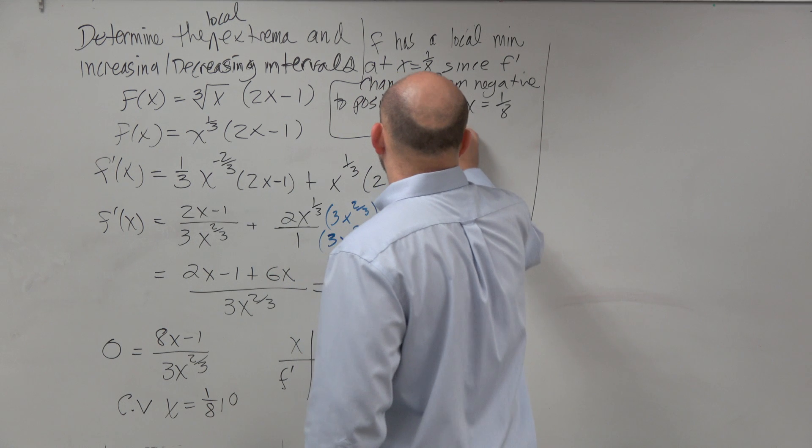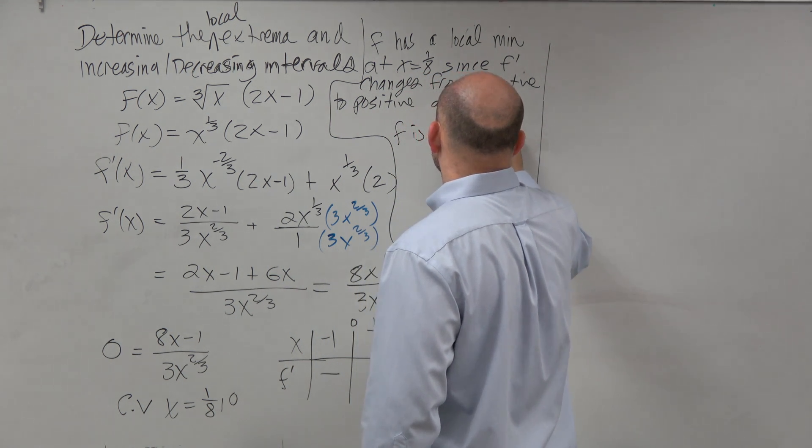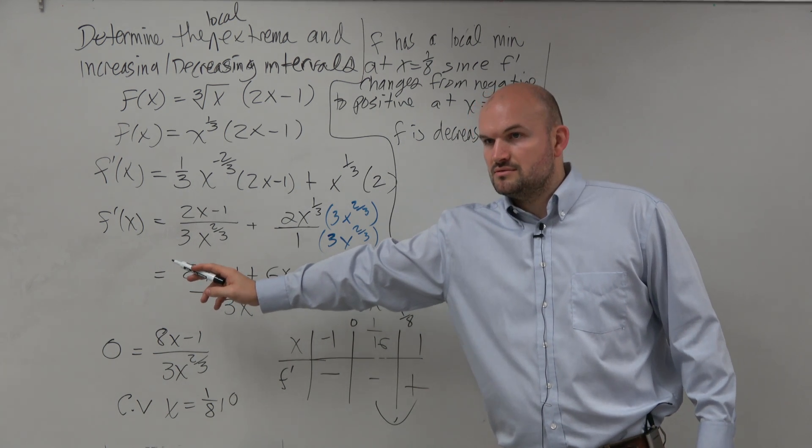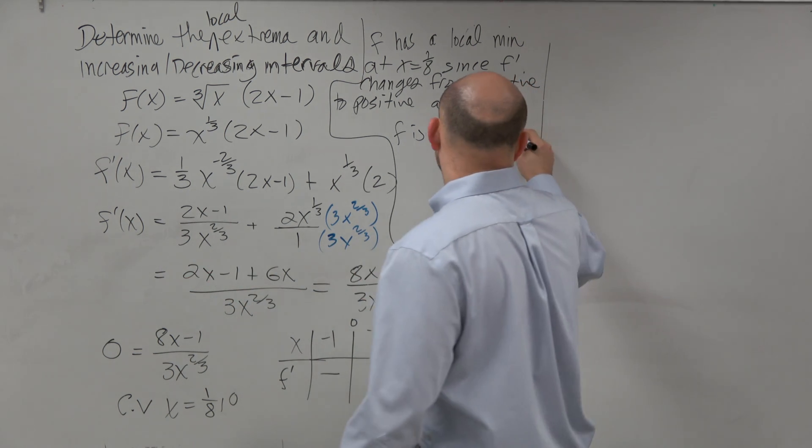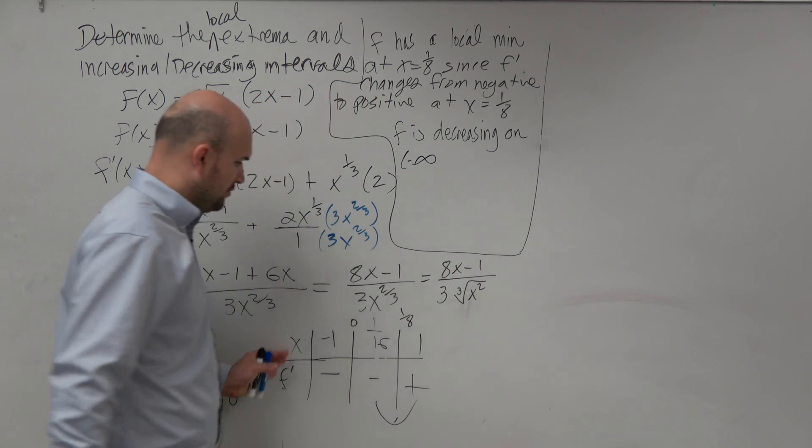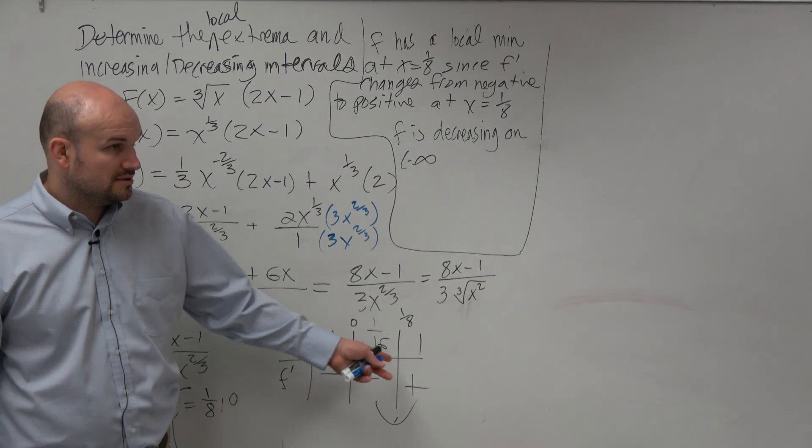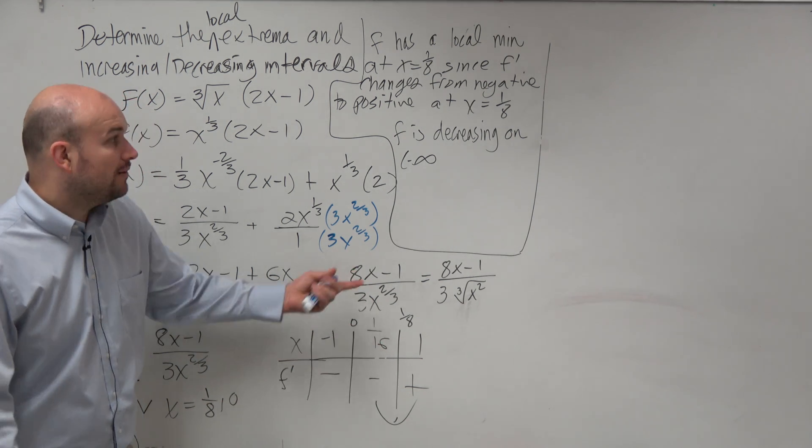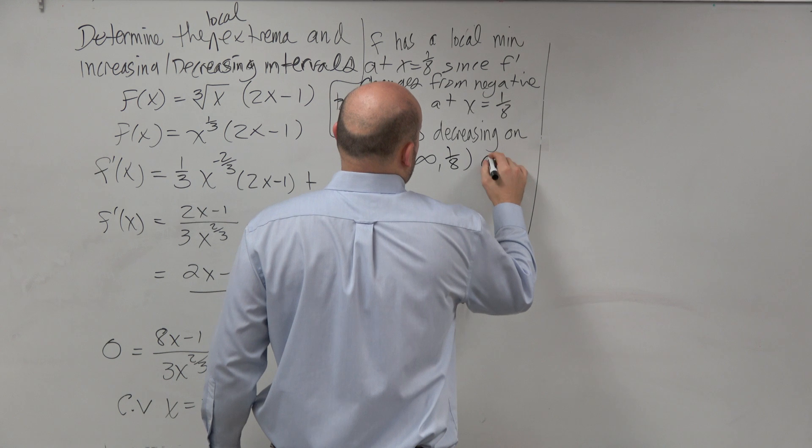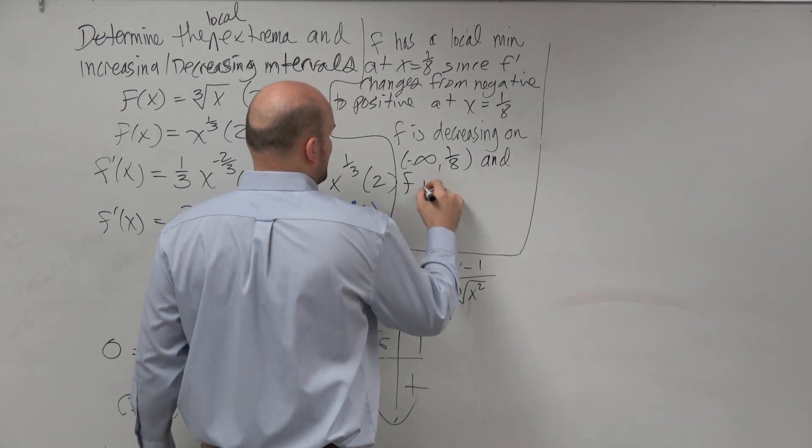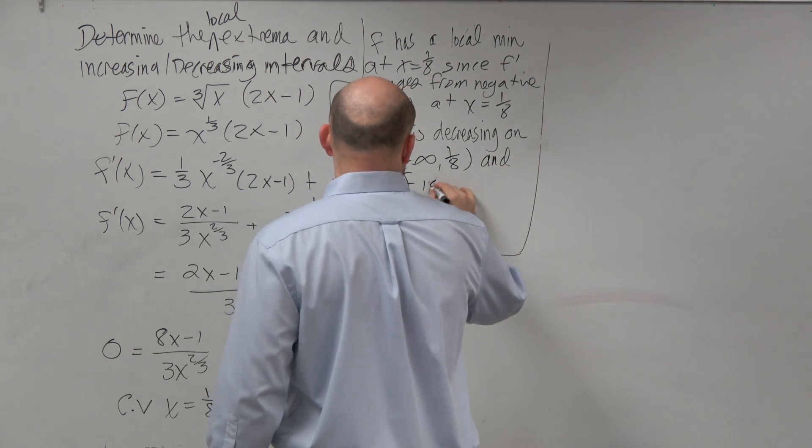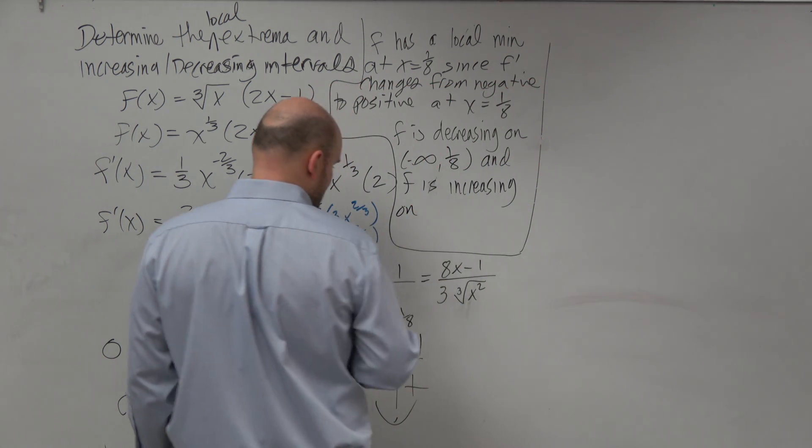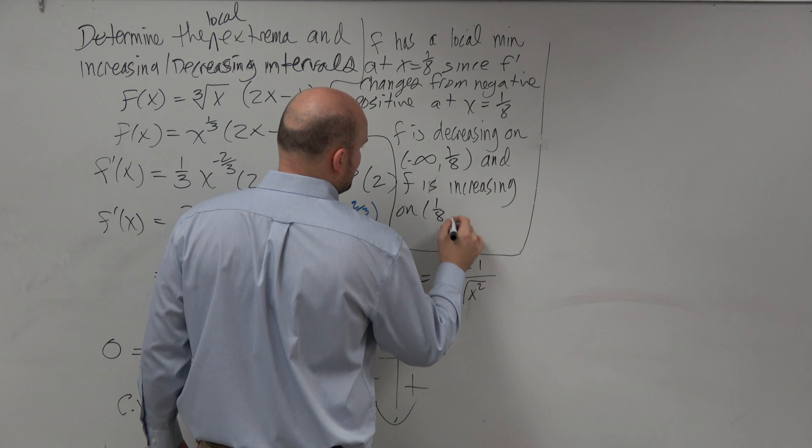So we could say f is decreasing. Well, if there's no closed interval, how far are we going to go over? How far do we go? Negative infinity. So we could say from negative infinity to when does it actually start increasing at 1/8.